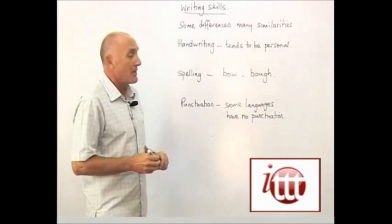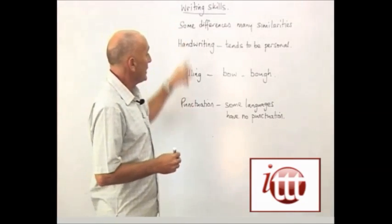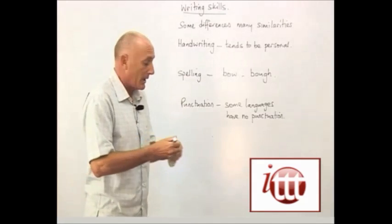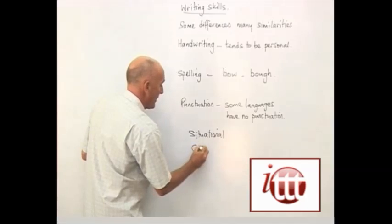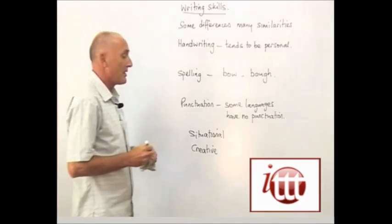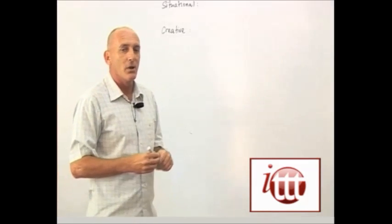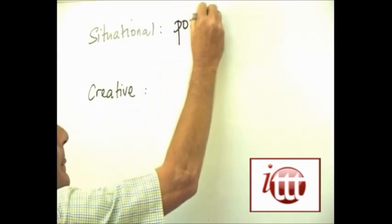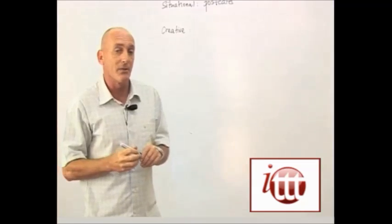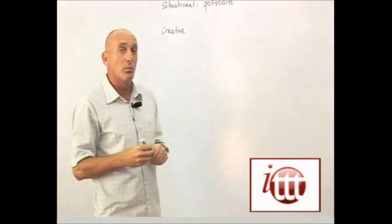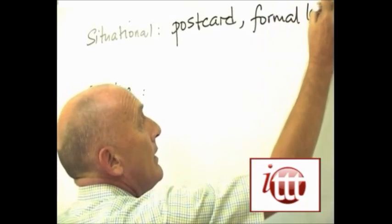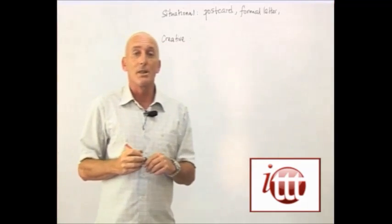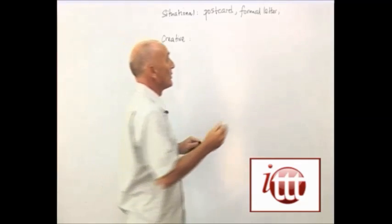There are different types of writing that we can do within each of these particular skills, and they would be categorised as either situational or creative. A situational piece of writing refers to a different type of writing that might take place. For example, the way in which we write a postcard would probably not be the same as the way we would write a formal letter, and the way in which we write a formal letter would probably not be exactly the same as we would write an email.